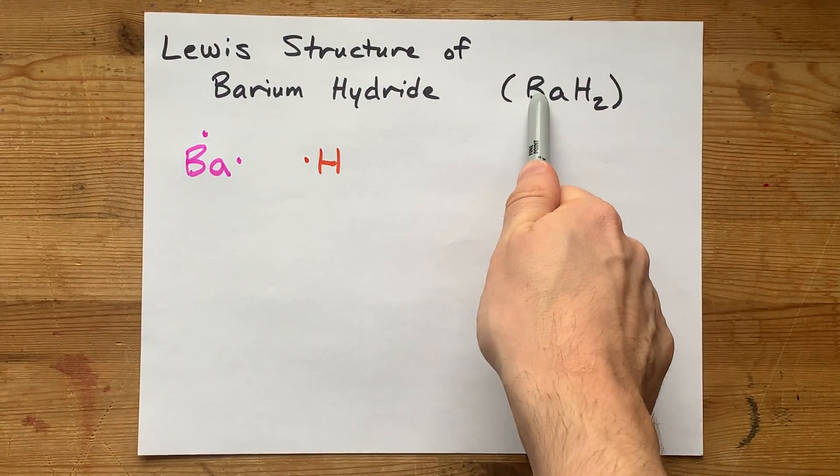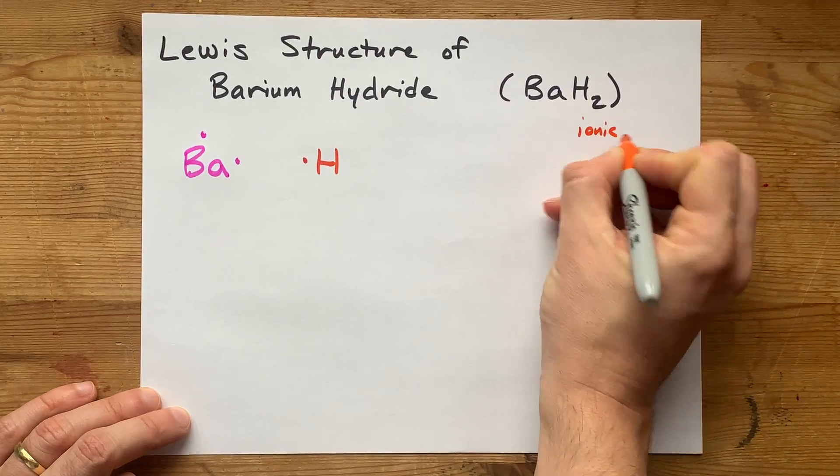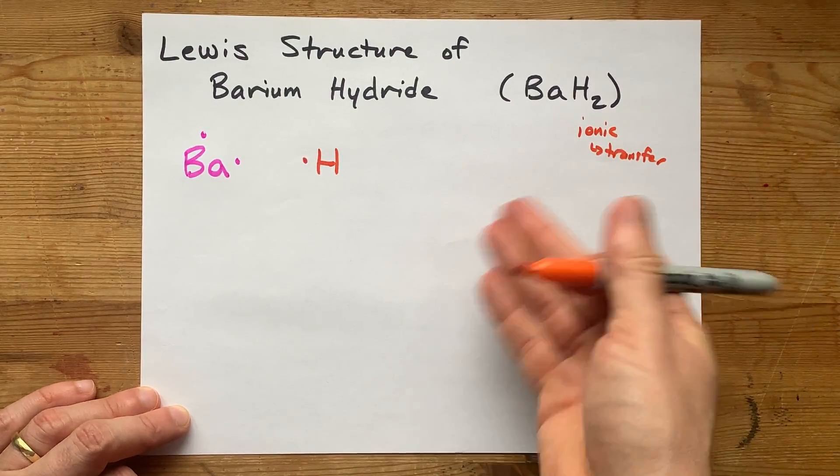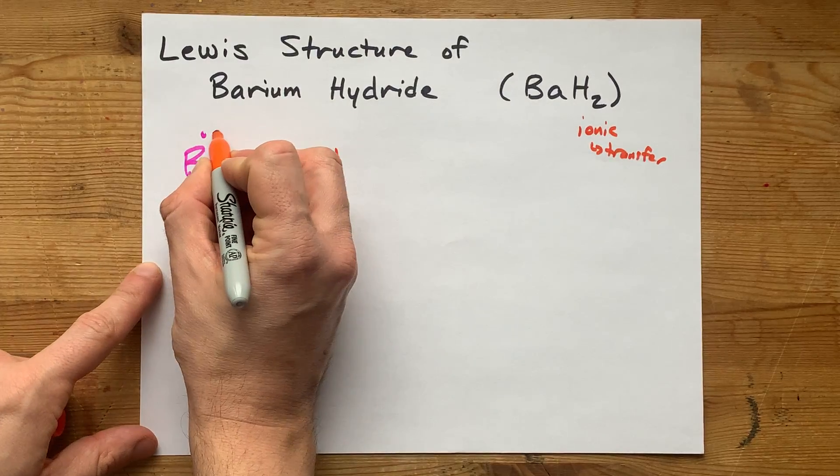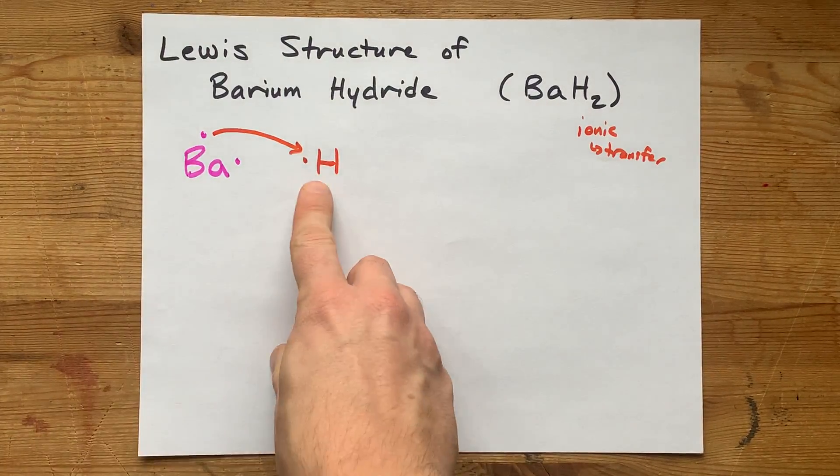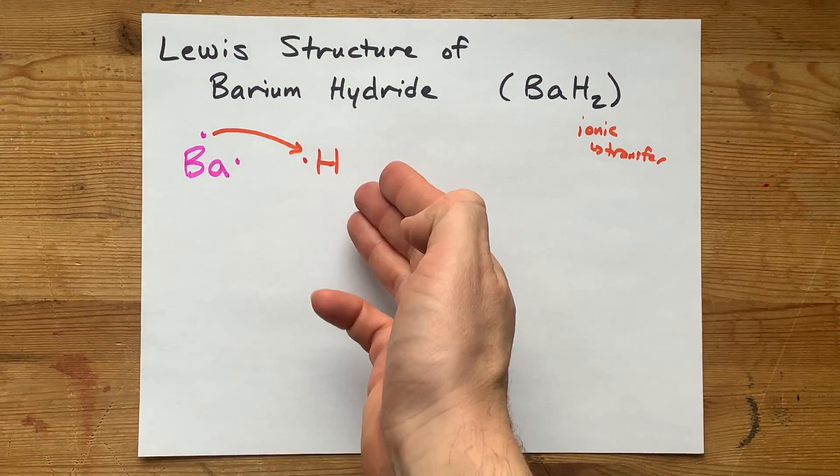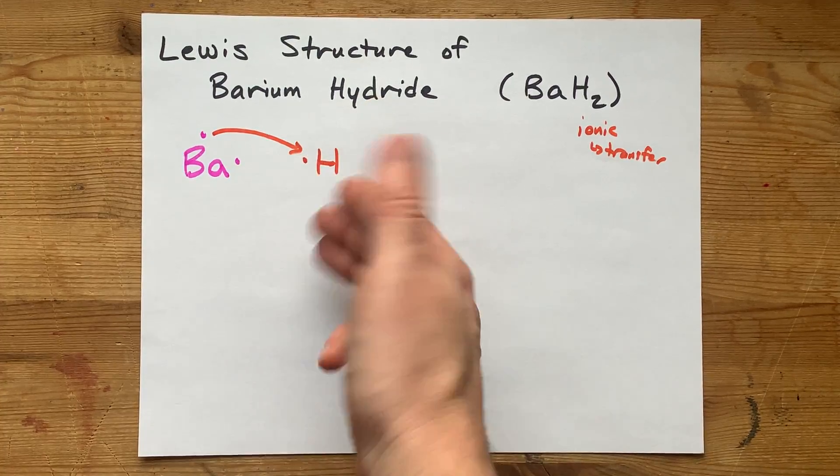Now a metal plus a non-metal will combine to make an ionic compound, which is a transfer of electrons from the metal to the non-metal. Now barium is going to give one of its electrons to that hydrogen. That means that hydrogen is going to have two electrons around it. That gives it a charge of minus one and makes it into a hydride anion.